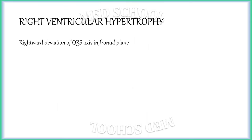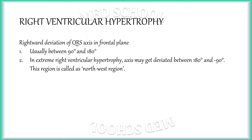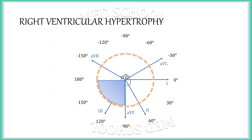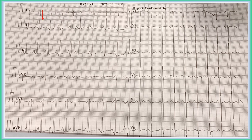In right ventricular hypertrophy, the QRS axis in the frontal plane is shifted to the right — usually between 90 degrees to 180 degrees. But in extreme right ventricular hypertrophy, the axis may be deviated between 180 degrees to minus 90 degrees; this region is called the northwest region. When the QRS vector is present anywhere between 90 degrees to 180 degrees, the most consistent ECG pattern will be prominent positive deflection in lead III and prominent negative deflection in lead I, which indicates right axis deviation.